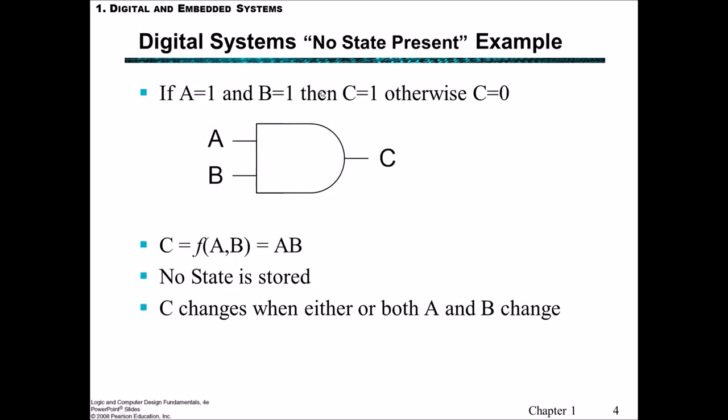Here's a simple example of a digital system that has no state present. You've probably seen these logic gates before. If A is on or high or 1, and B is 1, then C is also 1. This is an AND logic gate, but there's no system state. Simply changing the state of A or B will immediately change the state of C if that function applies. We can say that C is a function of both A and B. So 1, 1 gives a 1. If either changes to a 0, say A becomes 0 and B is still 1, then C equals 0.